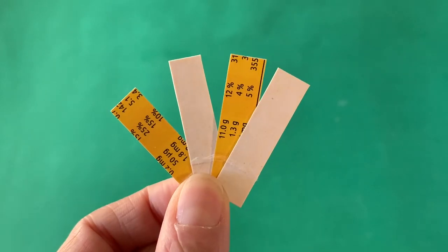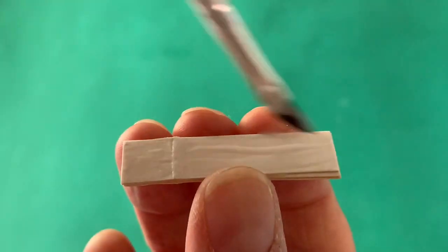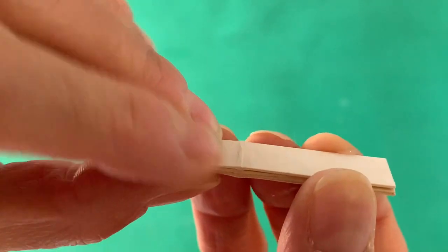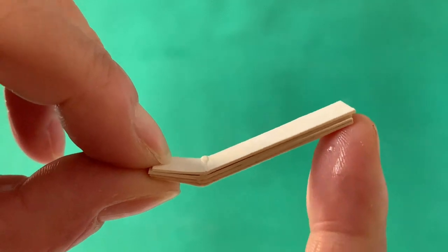Using the cutouts from the base piece, we can make the catcher element. Stack and glue four layers together, making sure to crease the left end at 1cm so the catcher lifts up and down.